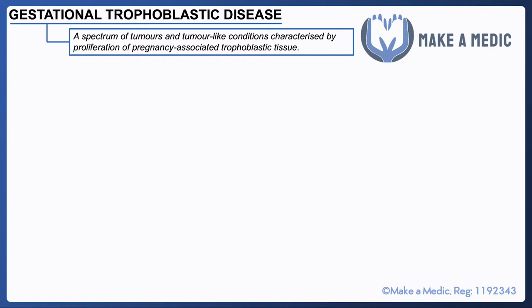Gestational trophoblastic disease is also known as molar pregnancy and can be subdivided into either being a partial mole or a complete mole. That definition is based on the actual cytogenetic makeup of the conceptus that's formed.